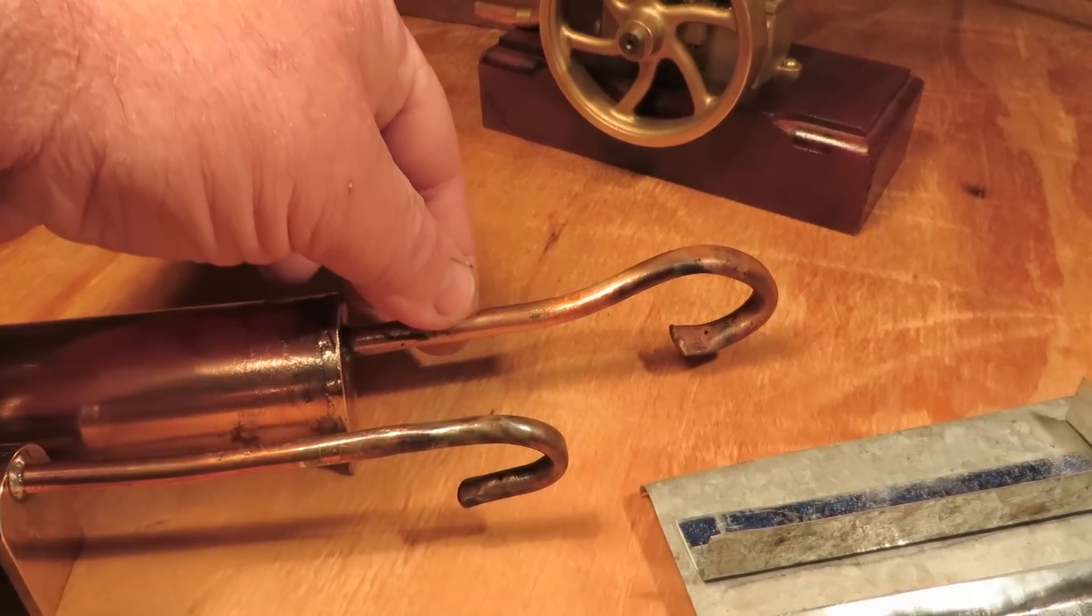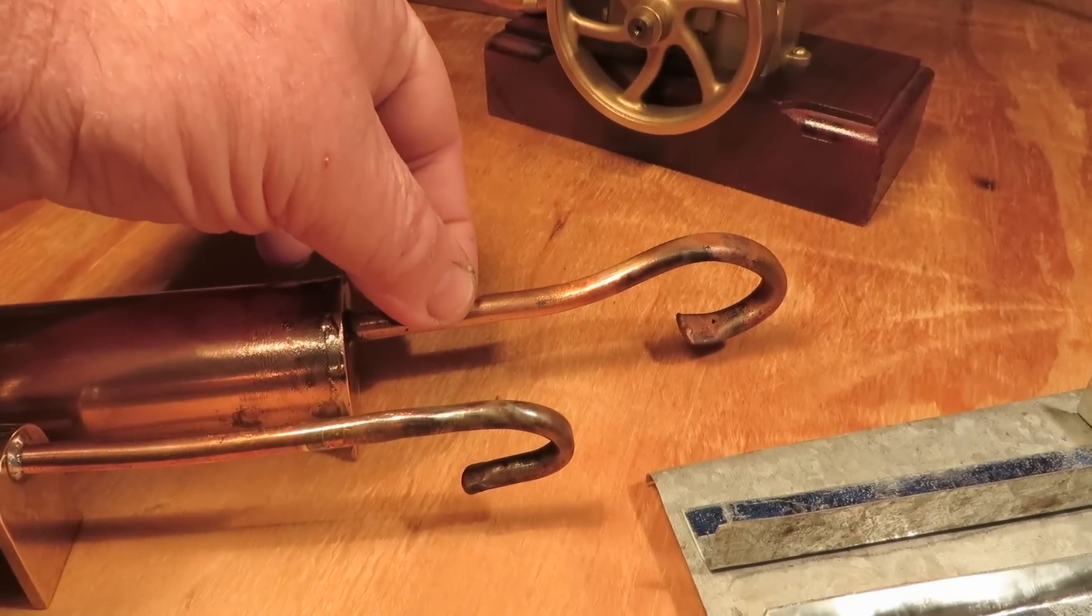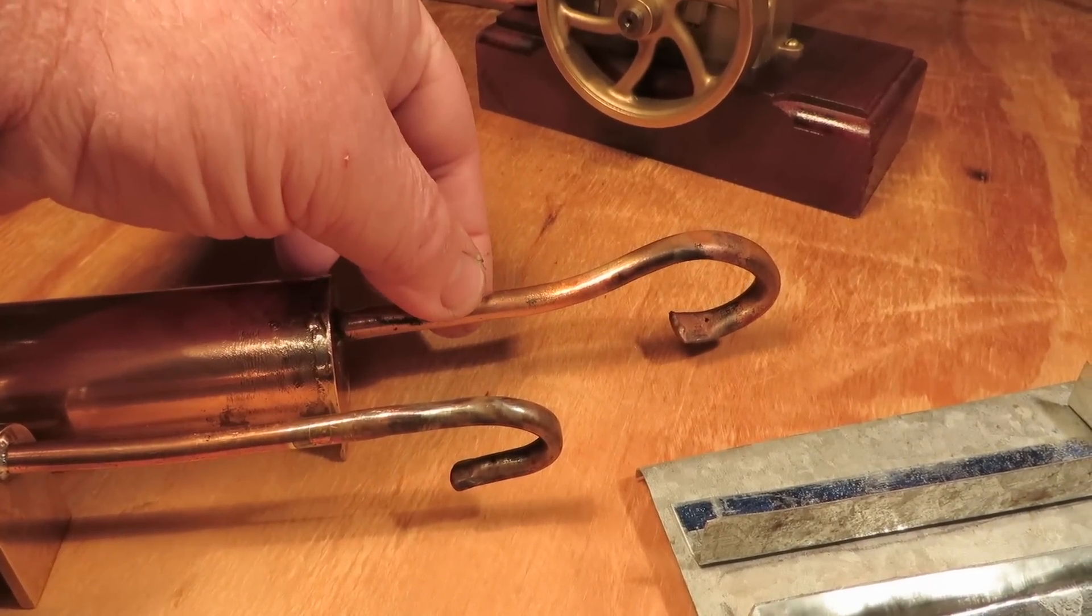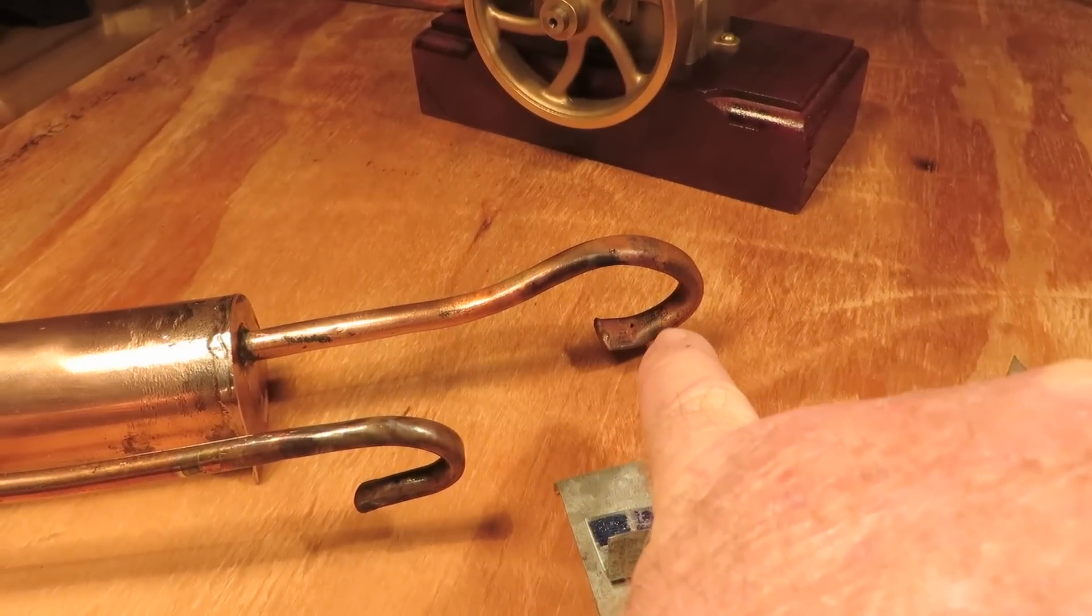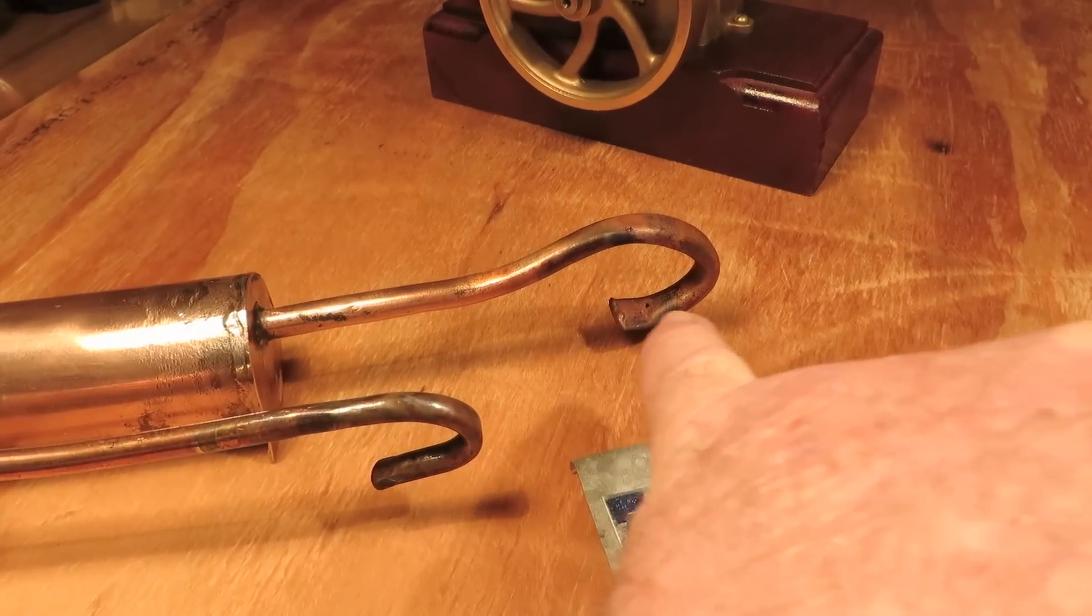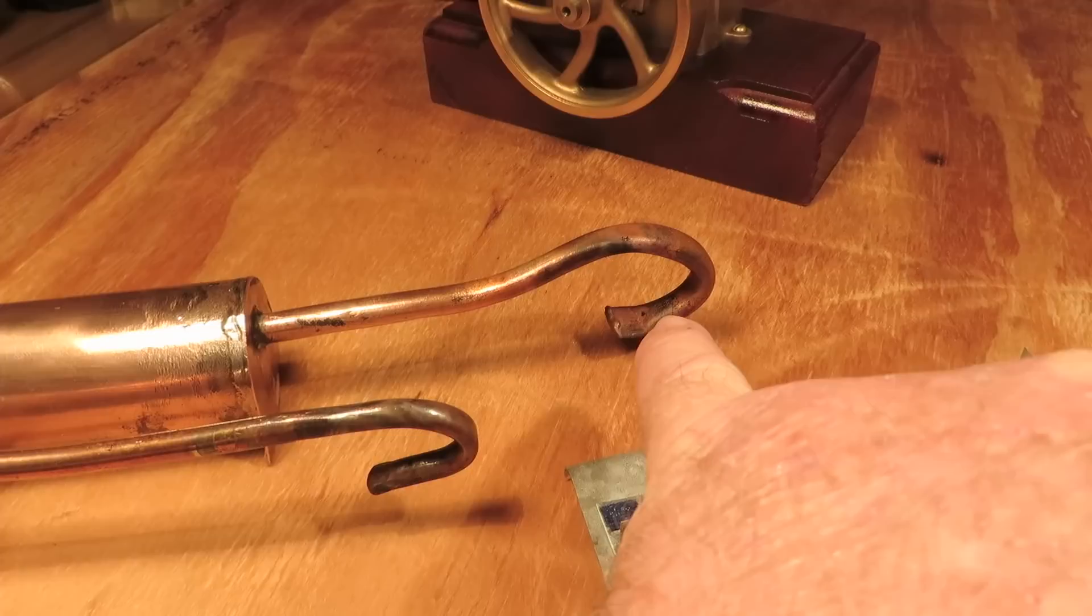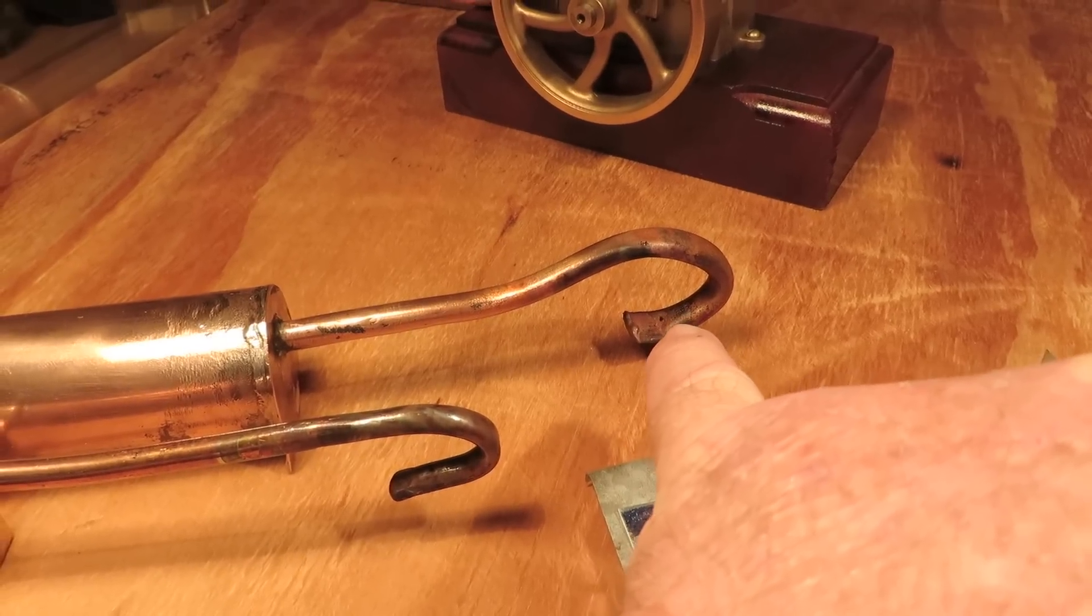I've also used thicker copper pipe than Trevor used and also my hole is slightly bigger. I've been mucking around throughout the day with the angle of this, I'll call it the jet, the hole where the metho exits.